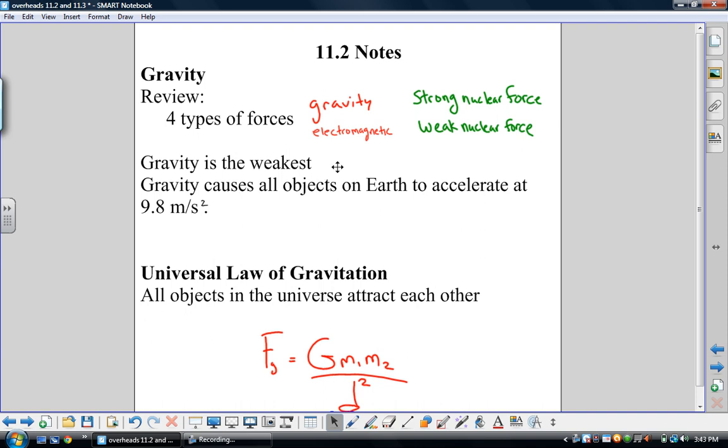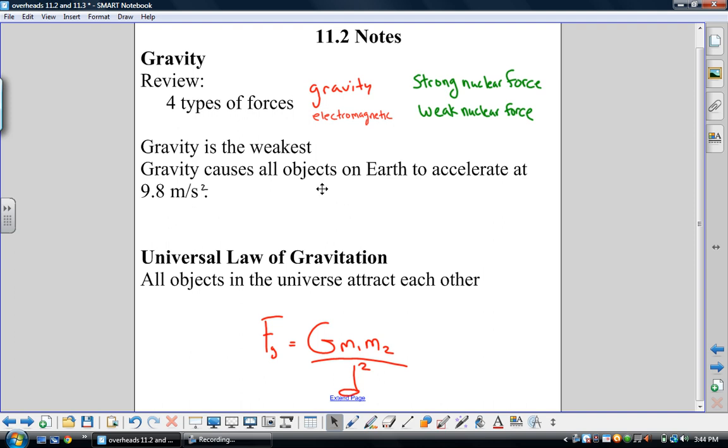Of these forces, gravity is the weakest. This is a little bit review from junior high. Gravity causes all objects on Earth to accelerate at 9.8 meters per second squared. So something is falling freely and we can ignore air friction. That is the value of the acceleration. Students need to memorize this number, not just for this chapter, but for chapters to come. They are going to need to know that. We often designate that value with a lowercase italicized g.